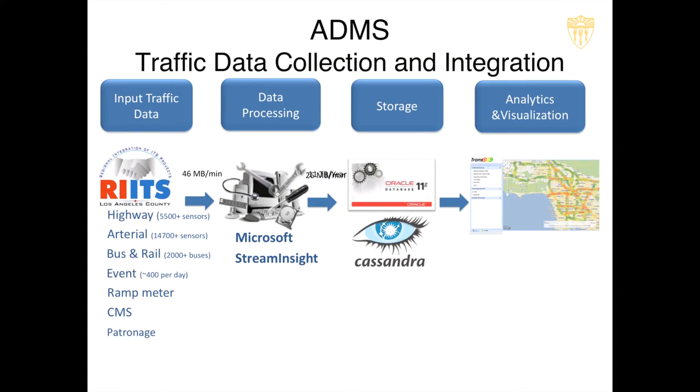ADMS is a framework to collect and archive big transportation data from Los Angeles road networks. The data comes from several sources. These include highway sensor data — loop sensors. There are about 5,000 sensors, spaced about one mile apart from each other in Los Angeles. They provide data every 30 seconds. The data we get from these sensors includes number of cars passing from the locations, volume, occupancy, and average speed.